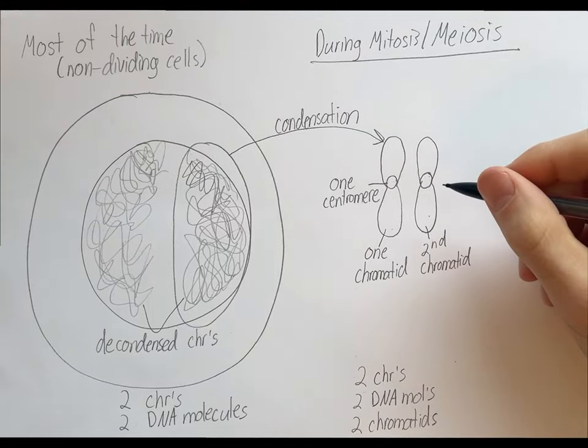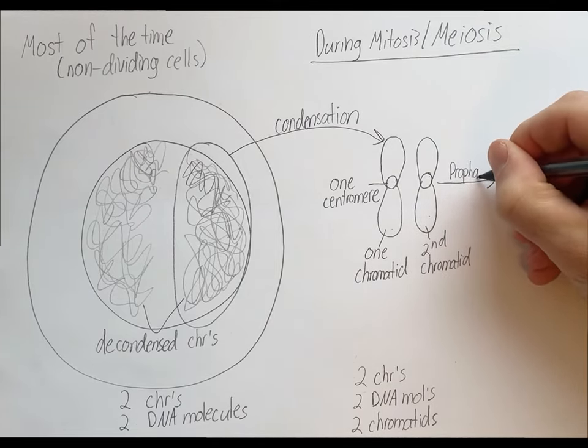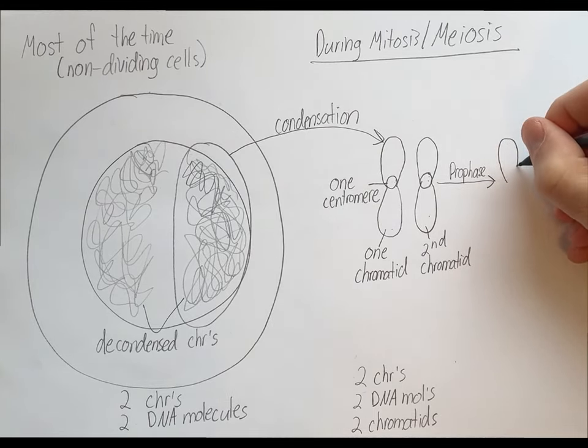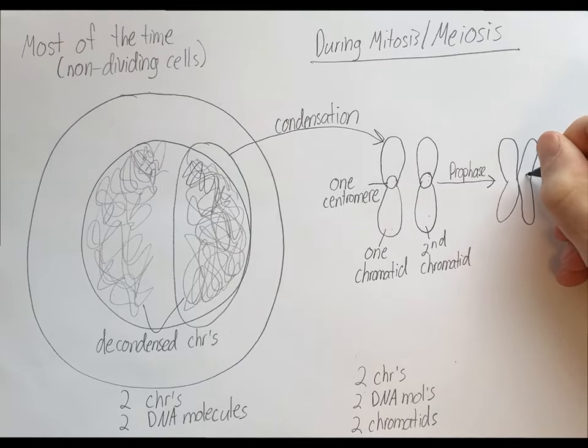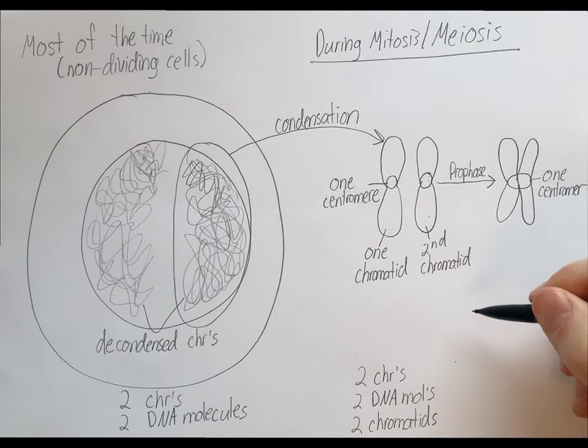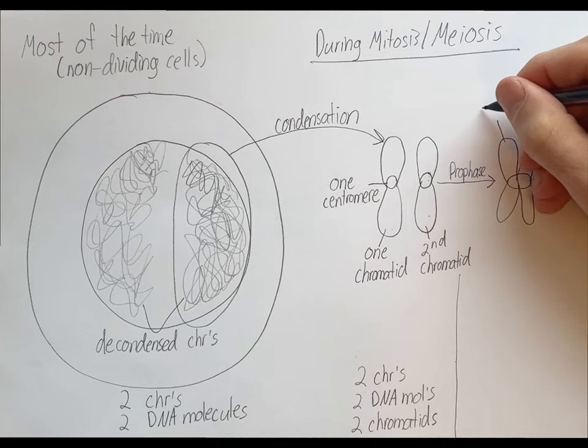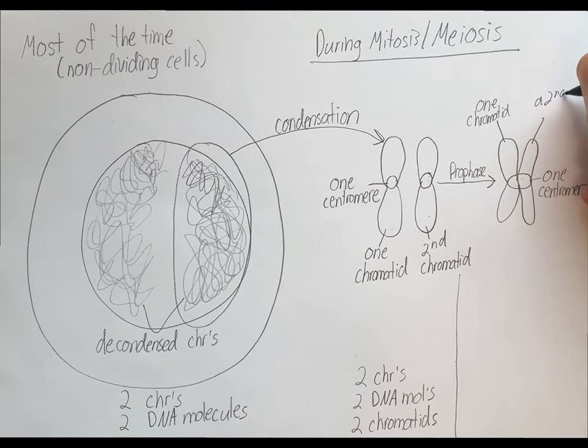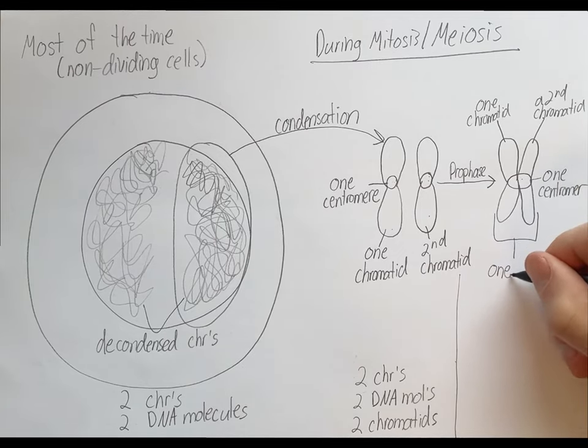Okay. Now, here's the somewhat confusing part. However, when the cell reaches prophase of either mitosis or meiosis, these chromatids will have paired by then, forming a structure like this. So here's one chromatid, and here's another chromatid. Okay. And now these chromatids share one centromere. Okay. However, what we call this is different than what we call these. So even though this is still one chromatid, and this is still a second chromatid, this entire structure is now known as one chromosome.